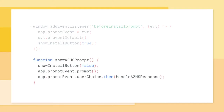Then, when the user clicks on that button, call prompt on the saved event. Chrome will then show the prompt to the user. If they click add, Chrome will add your progressive web app to their shelf and launcher.